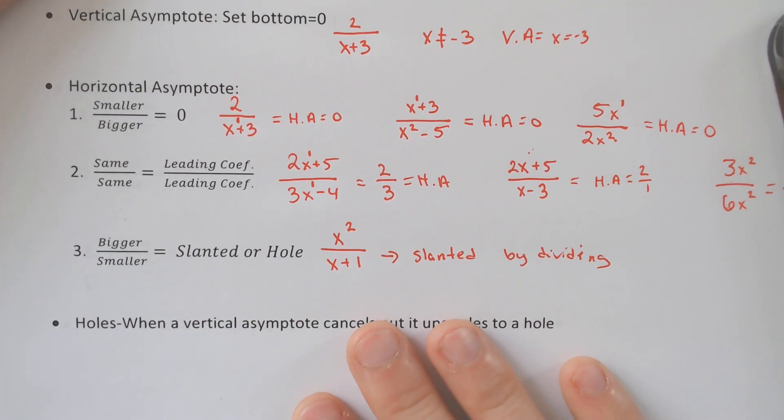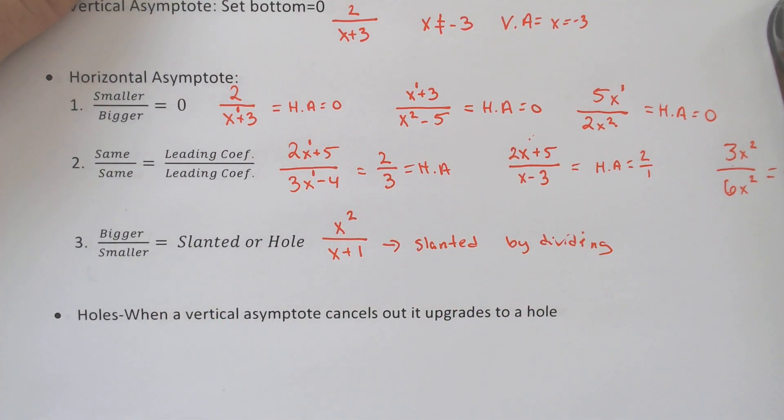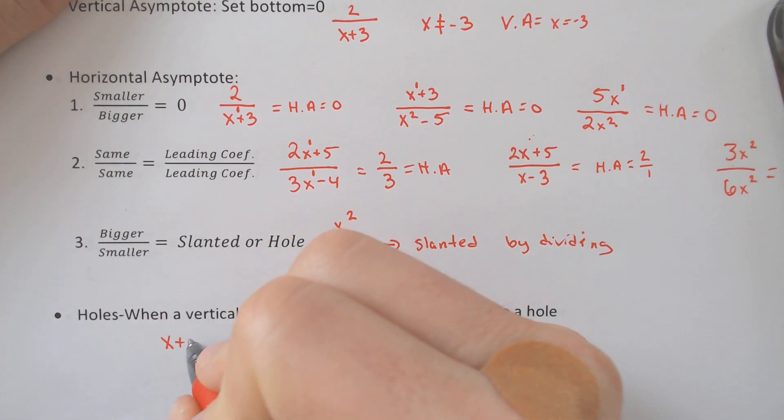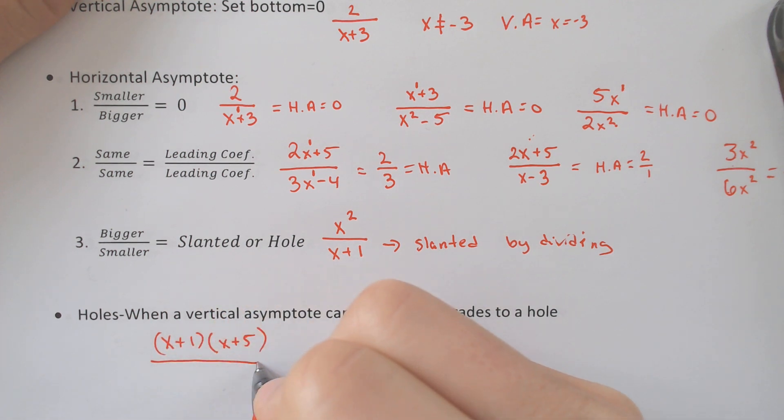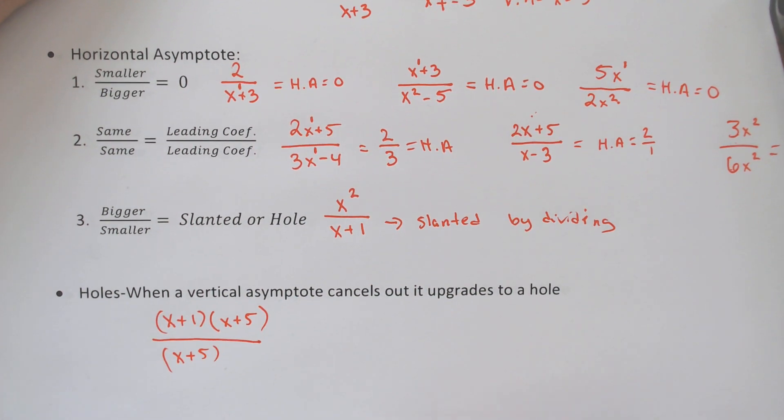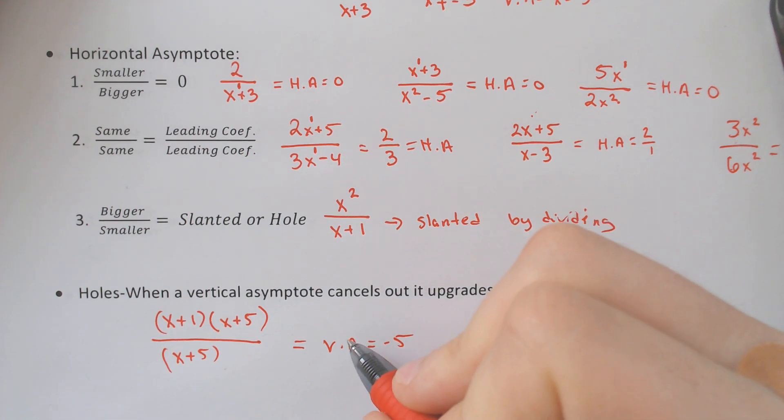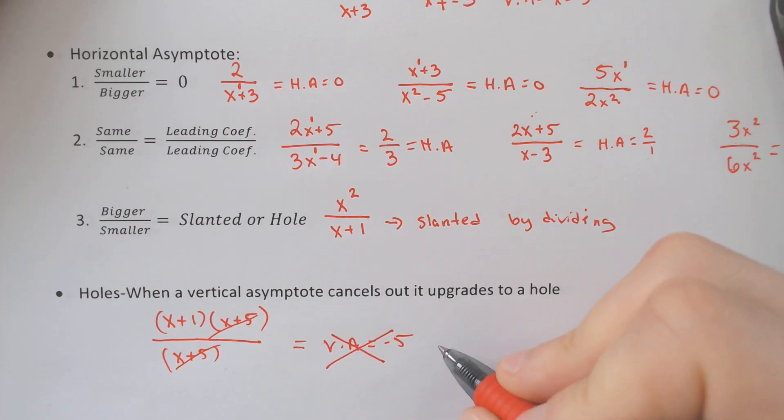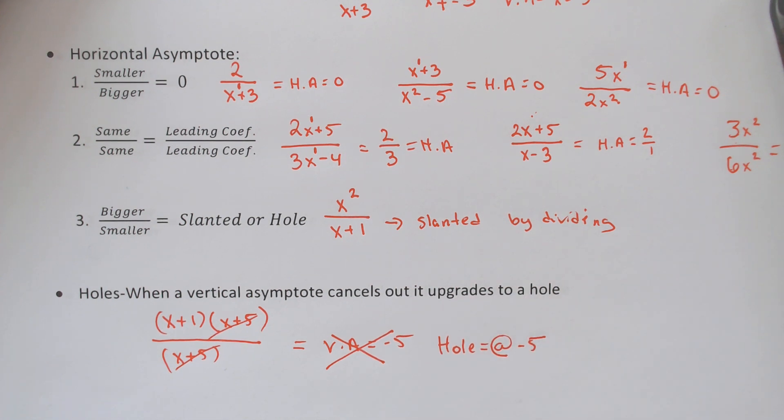We got one more scenario, and that is a hole. So for instance, if we had x plus 1, x plus 5, and x plus 5 here, here we would have had a vertical asymptote at negative 5. However, you may notice that the x plus 5s cancel out, and if we cancel that out, now instead of having a vertical asymptote, we have a hole at negative 5.